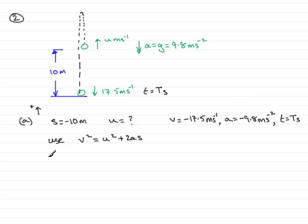And if we use that equation, we have that v is minus 17.5, so we're going to square that. So that's minus 17.5 squared equals u squared plus 2 times a, which is minus 9.8 times s, which is the displacement of minus 10.